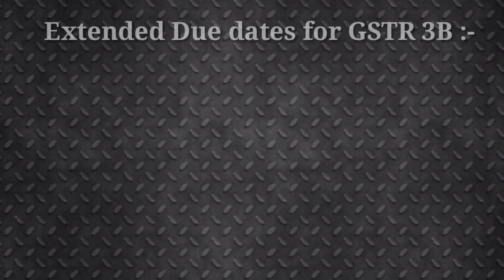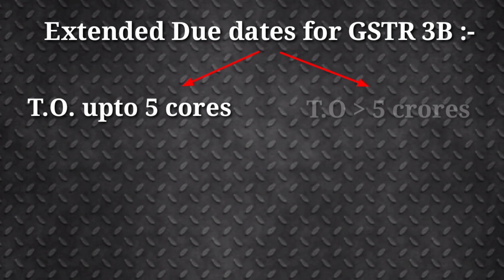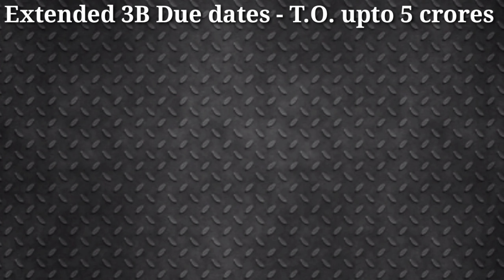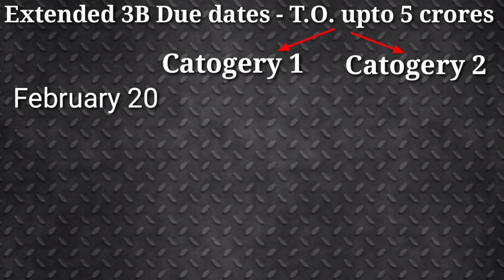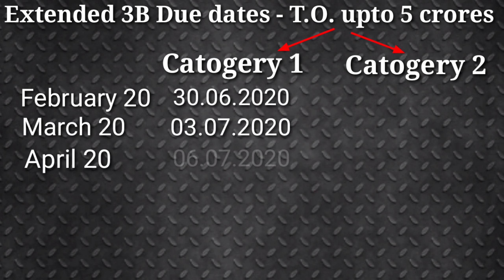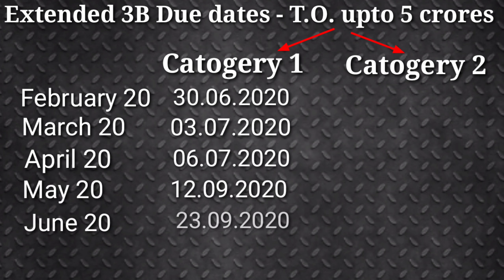Now let us discuss the extended due dates of GSTR 3B. For turnover up to 5 crores, due dates for Category 1 are: February — 30th June, March — 3rd July, April — 6th July, May — 12th September, June — 23rd September, July — 27th September.